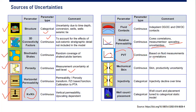There will also be uncertainty — we cannot be 100% sure about mechanical skin and productivity uncertainty, how about injectivity, and injectivity decline over time. Additionally, there is uncertainty in well count and placement, tuned to the categorical static model. All of these are sources of uncertainty.